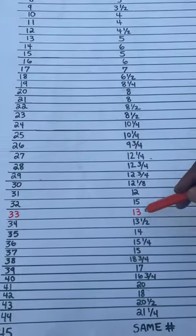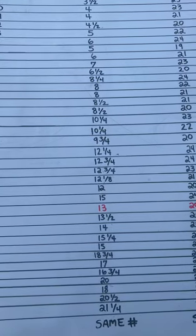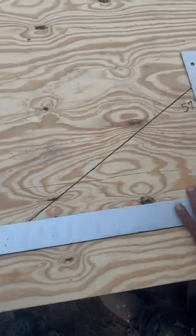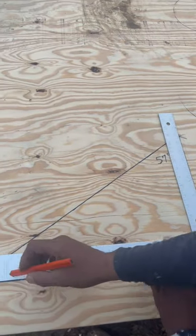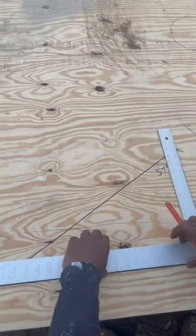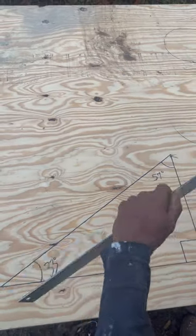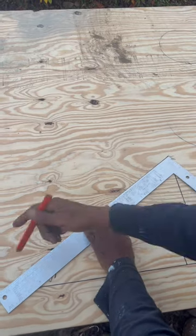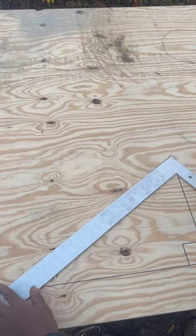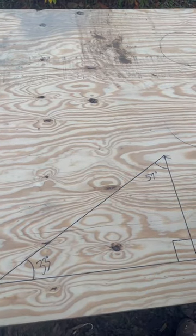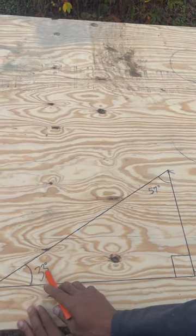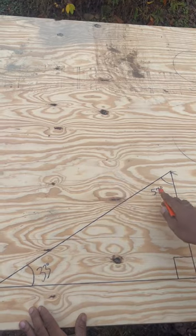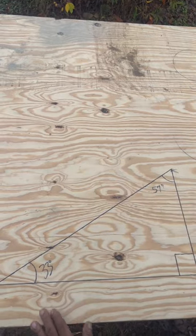So I need 13 on my tongue and 20 on my body. Now come over here — 13 on my tongue right here, 20 on my body. Let's make this into a triangle; all I'm going to do is connect these two, just like that. Boom — connect them. That's going to give me my 33 degrees down here and my complementary angle at 57 degrees. Temple Builders!